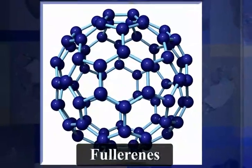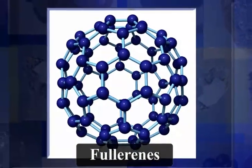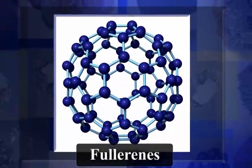Fullerenes are another class of carbon allotropes, which have carbon atoms arranged in the shape of a football.